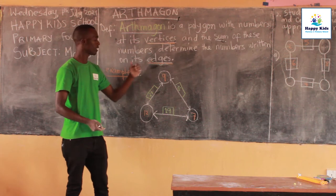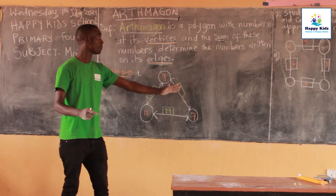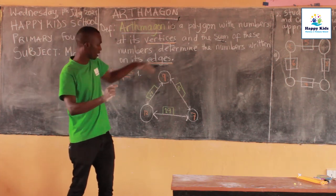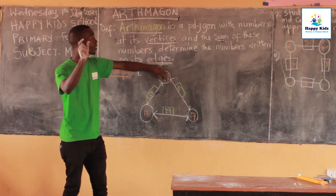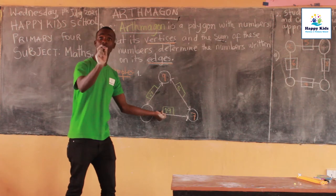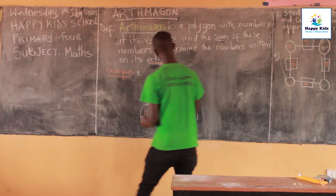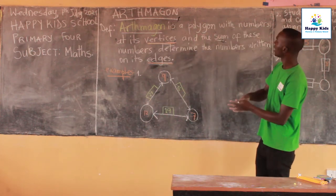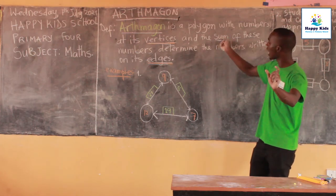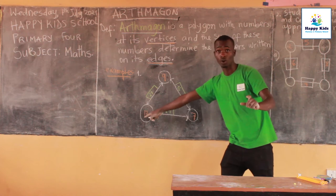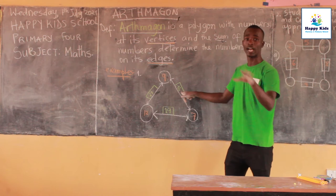I want to show you how this Alphimagon will be complete. It will be complete when we are having numbers in the vertices and numbers on each edge. They are telling us that the sum of the numbers which are in the vertices of the polygon is written on the edge of each and every side.